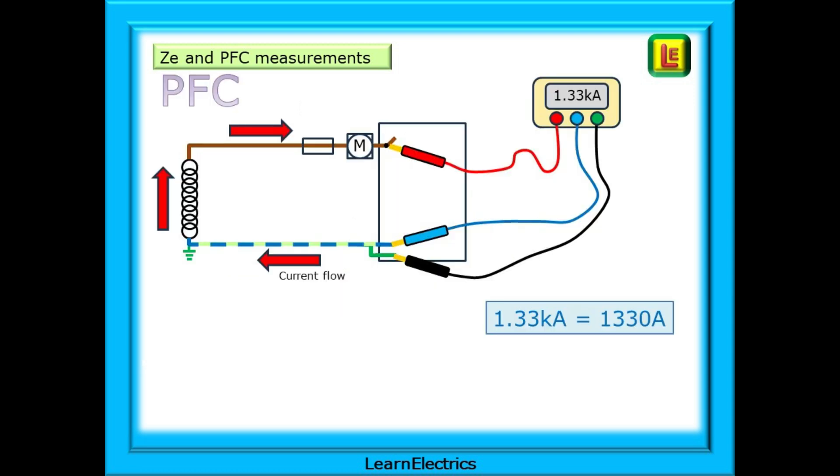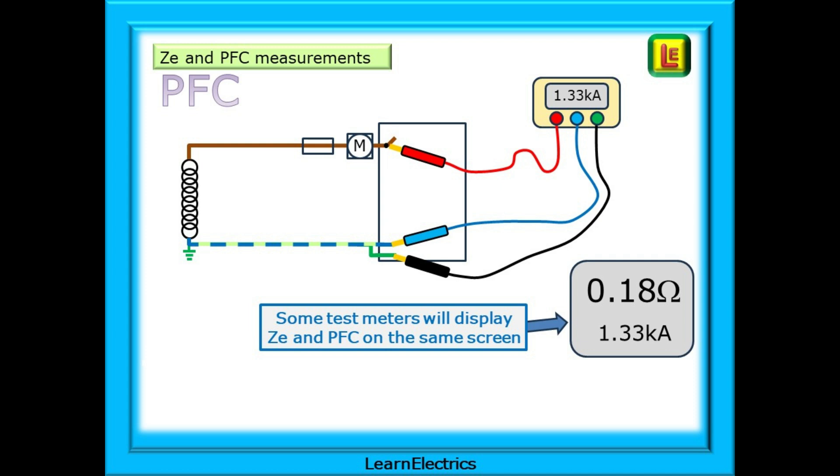So a three wire test on a TNCS system might return 1.33 kiloamps. Kilo - thousands of amps - and 1.33 kiloamps is the same as 1330 amps. Most meters will display results in kiloamps and again the test can be as a three wire test or a two wire test. Some meters will display ZE and PFC on the same screen as shown here. So one test will do the ZE and PFC at the same time. It's a useful feature but it's not essential.